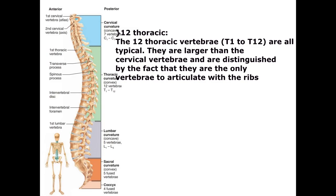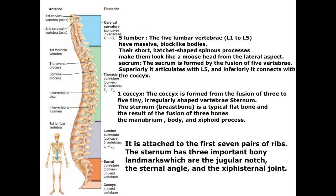The 12 thoracic vertebrae, T1 to T12, are all typical. They are larger than the cervical vertebrae and are distinguished by the fact that they are the only vertebrae to articulate with the ribs. The five lumbar vertebrae, L1 to L5, have massive block-like bodies; their short, hatchet-shaped spinous processes make them look like a moose head from the lateral aspect. The sacrum is formed by the fusion of five vertebrae; superiorly it articulates with L5, and inferiorly it connects with the coccyx. The coccyx is formed from the fusion of three to five tiny, irregularly shaped vertebrae.